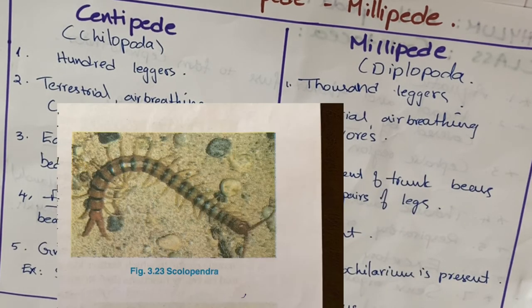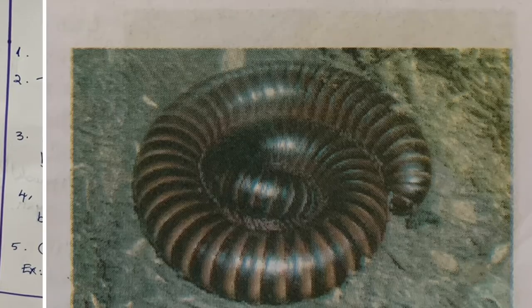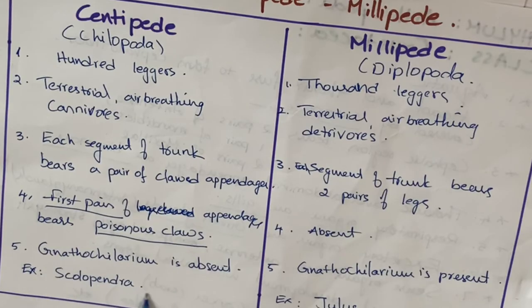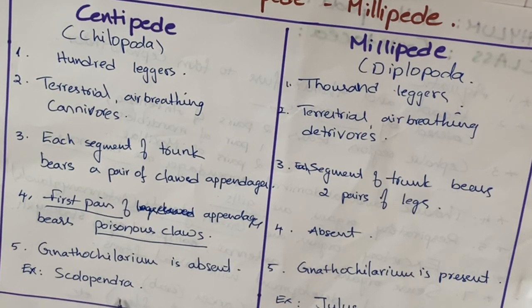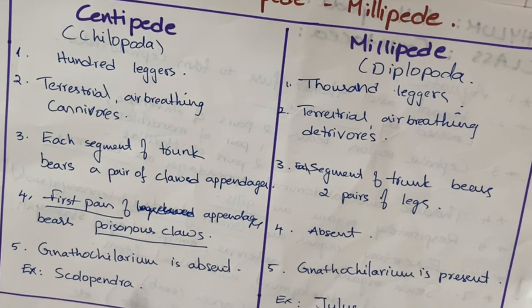Examples: for centipedes — Scolopendra; for millipedes — Julus. Scolopendra is also known locally as the 'centipede.' This comparison of centipedes and millipedes is important for the board examination four-mark question.